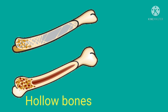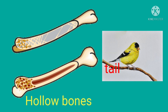The body of a bird is light because it is made up of hollow bones. Hollow bones can be filled with air. This helps it to fly easily and for a long period of time. The tail of a bird helps it to change directions while flying.